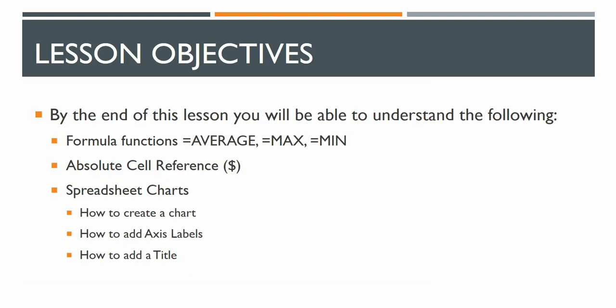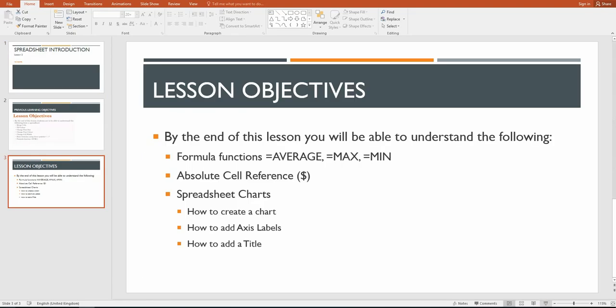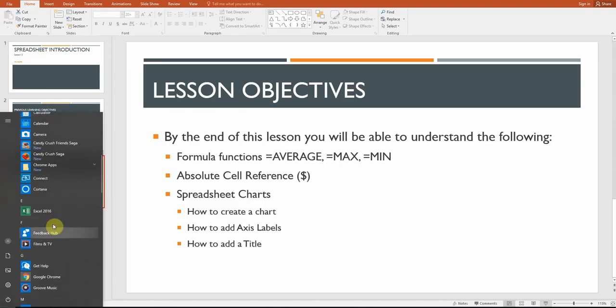Today's lesson we're going to look at three more functions: AVERAGE, MAX, and MIN. We're going to look at the absolute cell reference — what it is — and we're going to look at spreadsheet charts. We're going to create a couple of charts and add axis labels and titles to each of these as well.